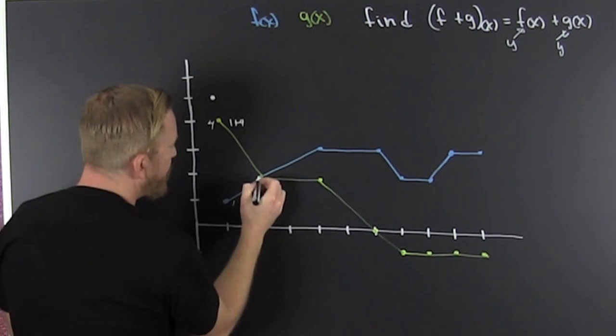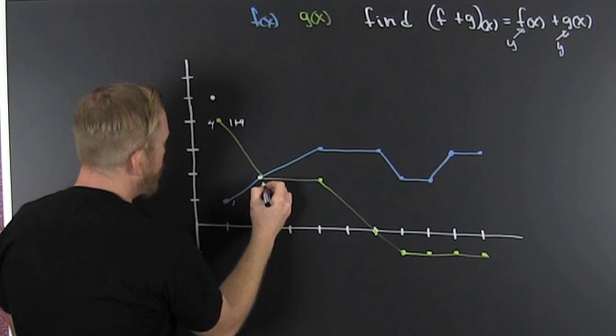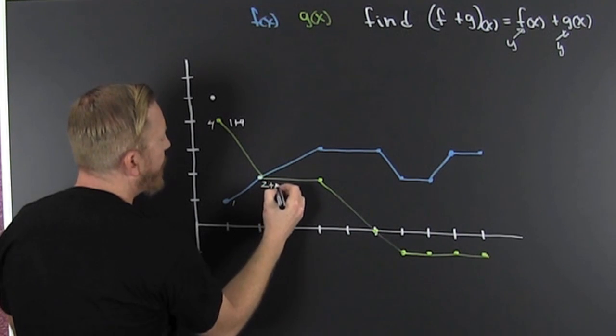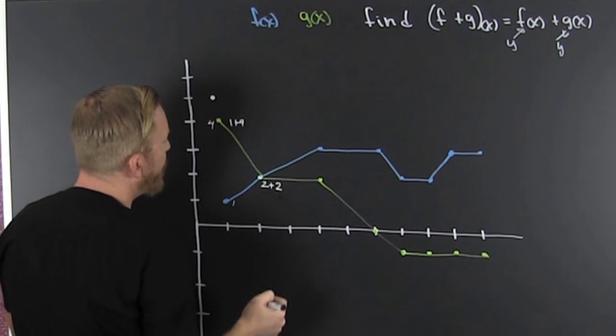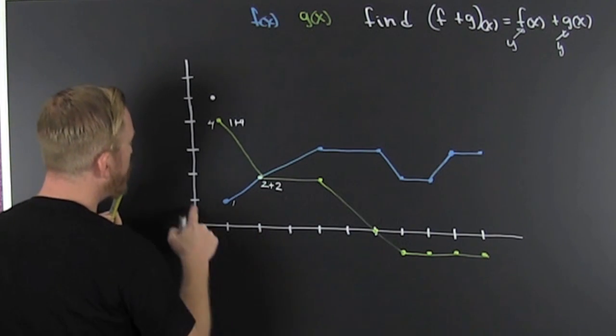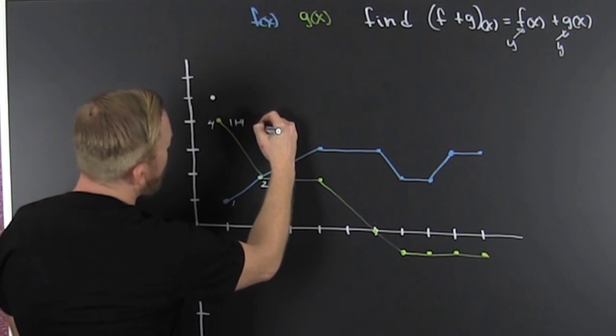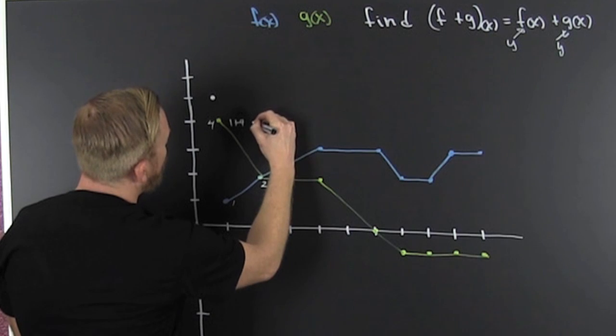Now here, bam. What's the blue value? Two. What's the yellow value? Two. Two plus two is four. Sure. So above two, one, two, three, four. I get a new white dot right there.